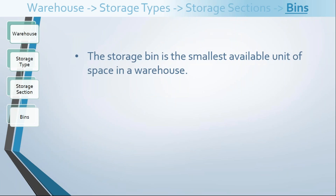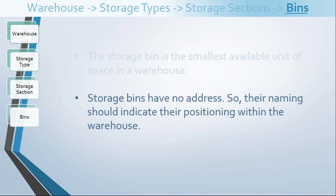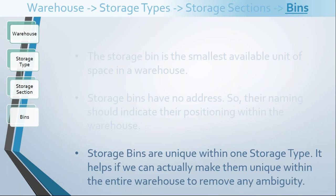The storage bin is the smallest available unit of space in a warehouse. Storage bins have no address, so their naming should indicate their positioning within the warehouse, as already discussed. Storage bins are unique within one storage type — technically you cannot create more than one bin with the same name under one storage type. Technically you could create another bin with the same name under a different storage type, but it is always recommended never to repeat the storage bin name. This ensures there is never ambiguity: if you ask someone in your warehouse to bring material from a specific bin, that person knows exactly which bin you mean. If two bins share the same name, there is a chance the person might pick the wrong material from the wrong bin.